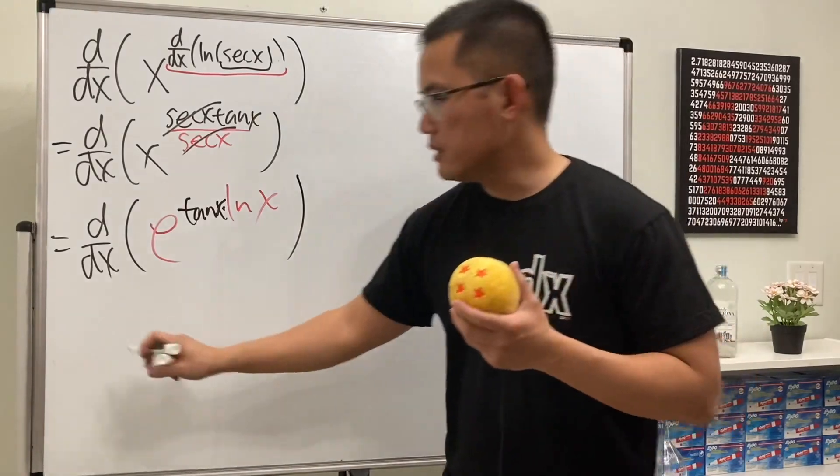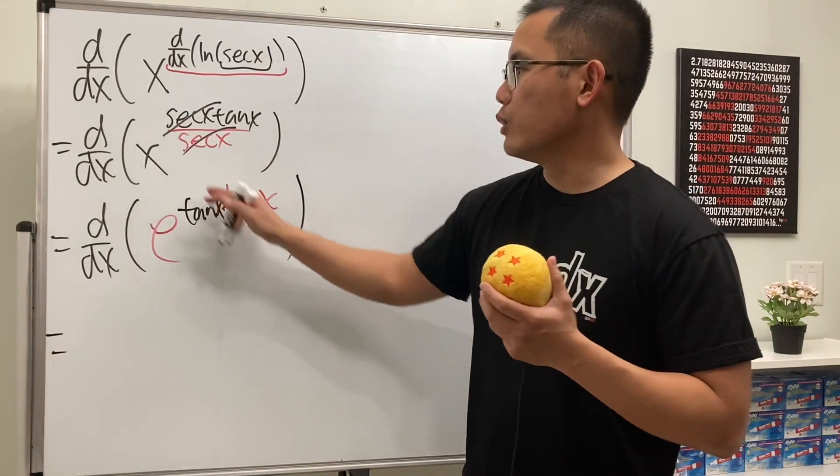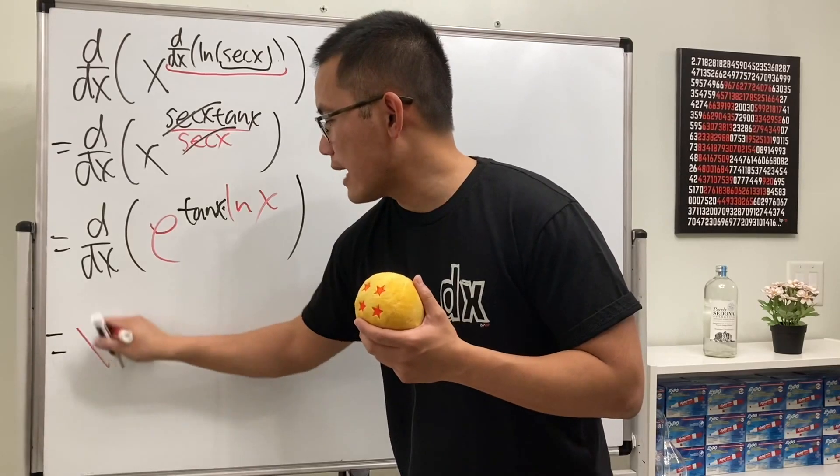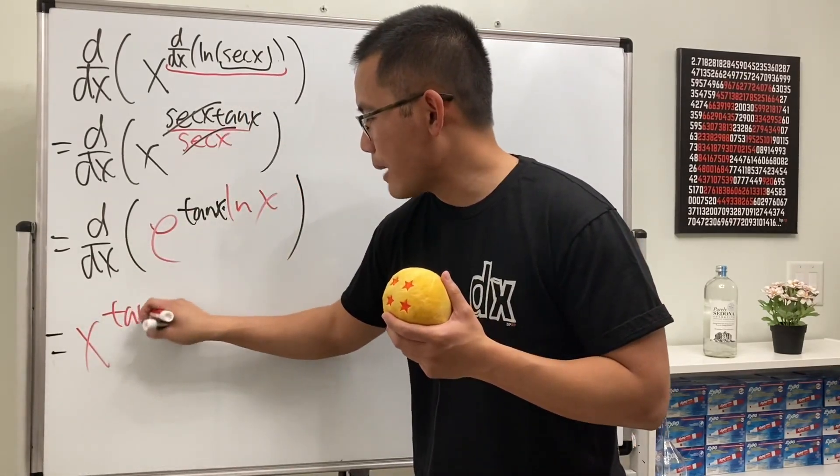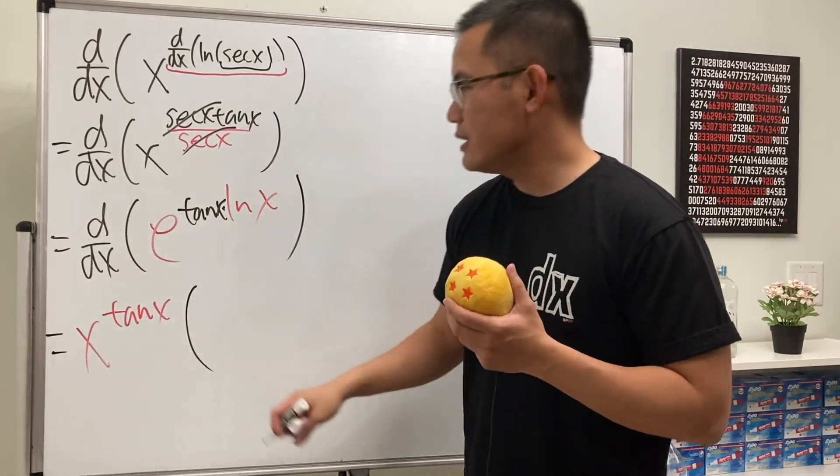Of course this thing just repeats, which is just the original—x times x to the tangent x power, like this. All right, and then use the product rule for the chain rule right here.